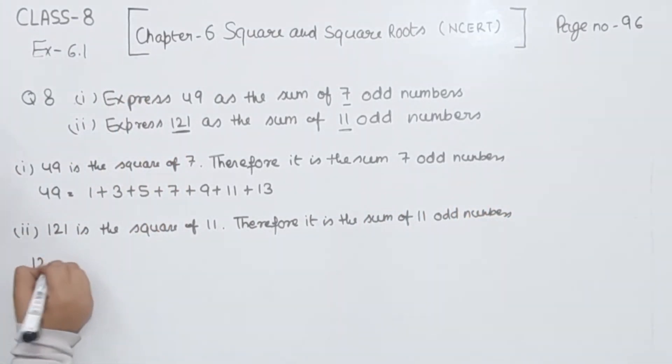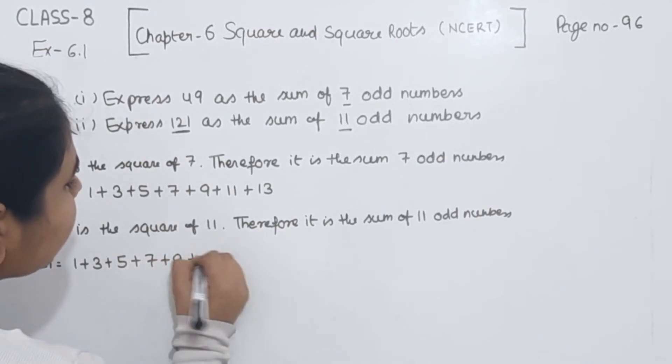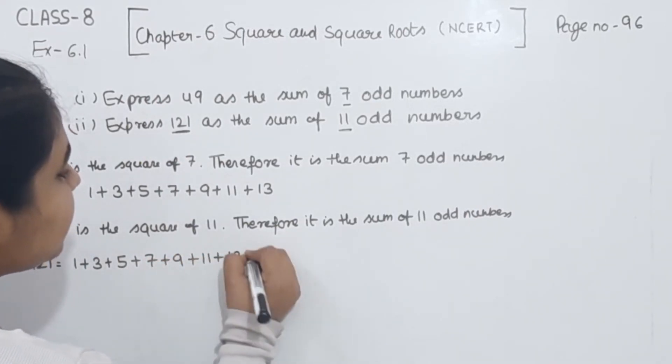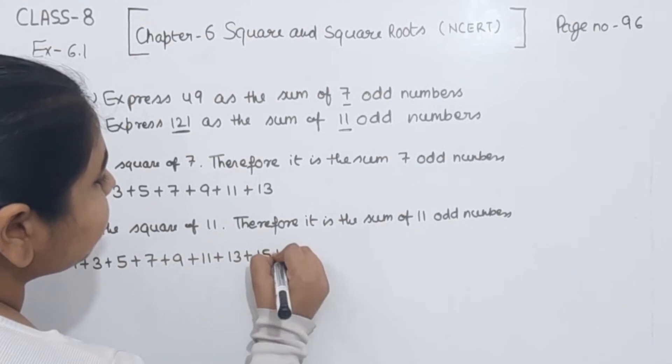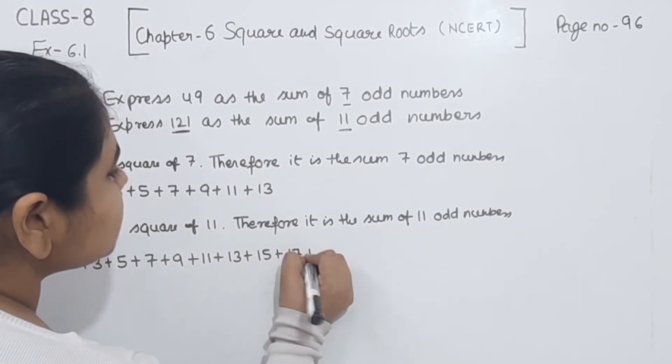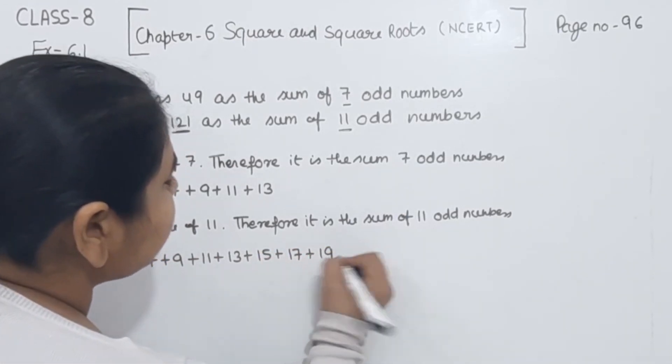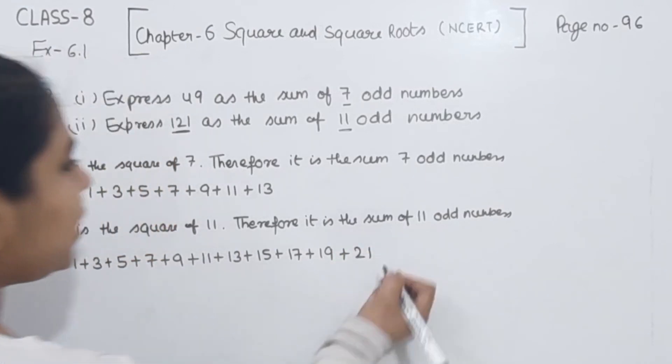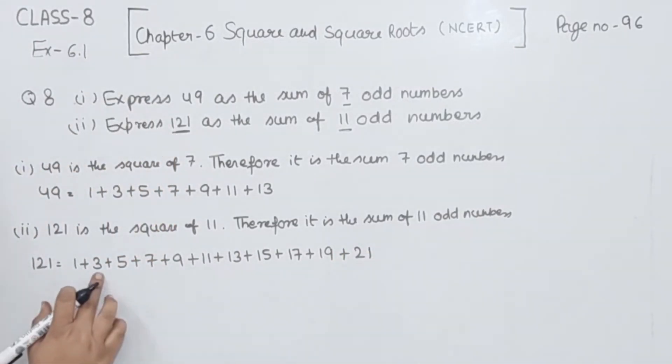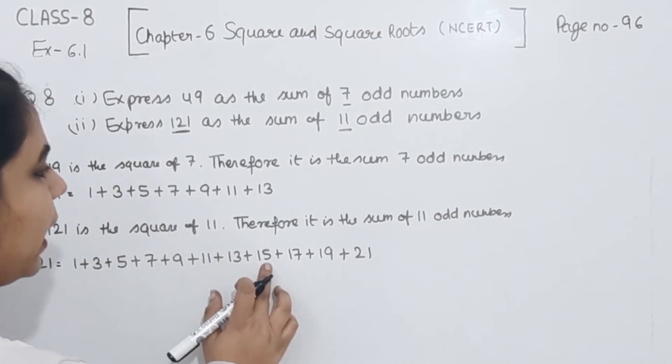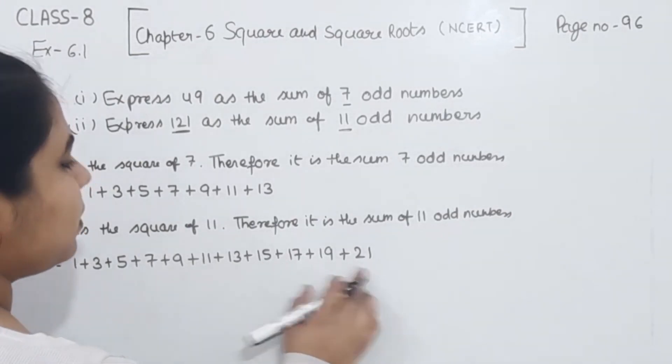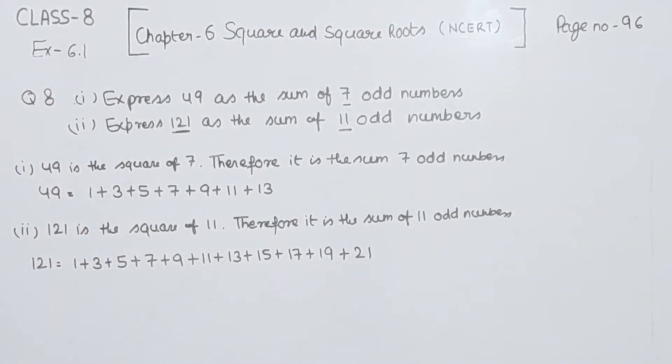I am going to write this one. 121 equals 1 plus 3 plus 5 plus 7 plus 9 plus 11 plus 13 plus 15 plus 17 plus 19 plus 21. Counting: 1, 2, 3, 4, 5, 6, 7, 8, 9, 10, 11. So this is the sum of 11 odd numbers.